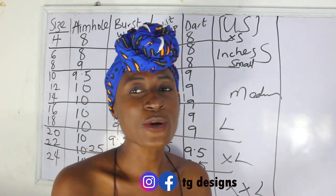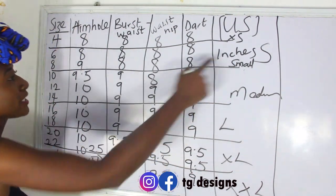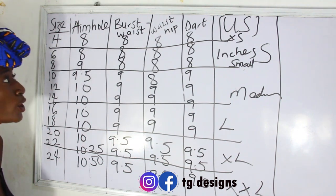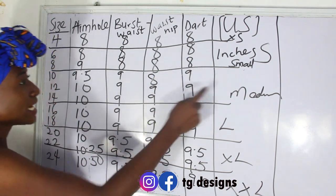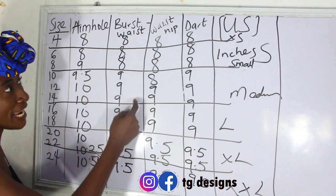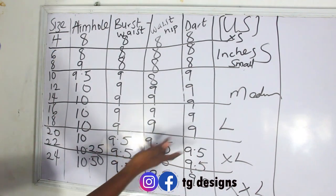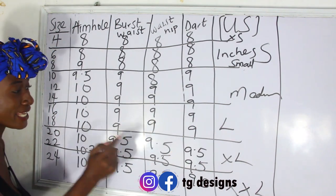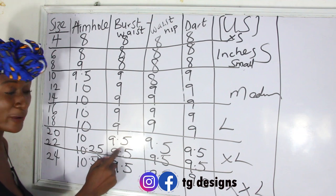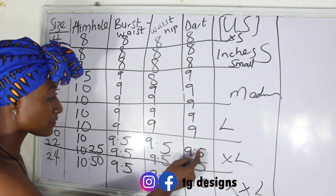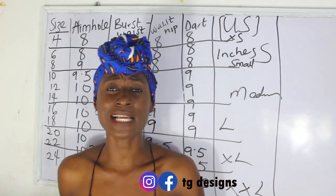From this grouping you can see why the measurements repeat. For the small group you'll see 8, 8, 8 inches. For the medium group it's 9, 9, 9 inches. For the large group it's 10, 10 and 9, 9, 9. For extra large it's 9.5, 9.5, 9.5 across all categories. That explains the repeated values throughout the chart.